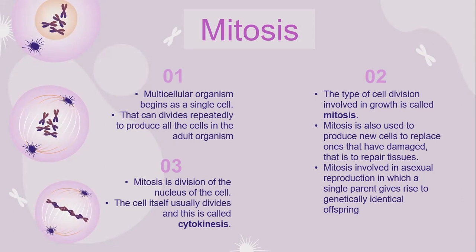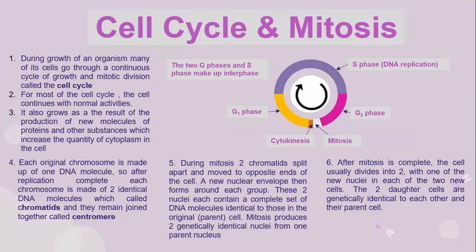Mitosis is the division of the nucleus of a cell, where the cell itself usually also divides, and this is called cytokinesis. Let's look into the process or the cycle of cell cycles and mitosis. From this diagram, you can see that the two G phases and S phase make up the interphase. During the growth of an organism, many of the cells go through a continuous cycle of growth and mitotic division, which is called the cell cycle. For most of the cell cycle,